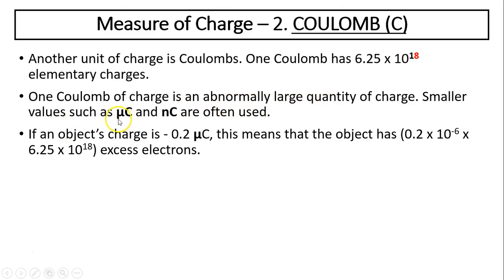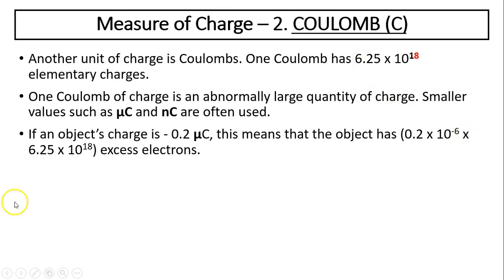Smaller charges such as microcoulombs and nanocoulombs are often used. You can check your reference table. Microcoulomb means 10⁻⁶ coulombs. The prefix nano means 10⁻⁹, so nanocoulombs is 10⁻⁹ coulombs. For example, an object with a charge of negative 0.2 microcoulombs has 0.2×10⁻⁶ times 6.25×10¹⁸ excess electrons.